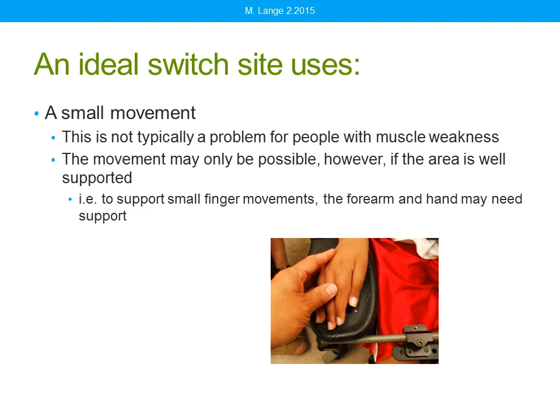We want as small a movement as possible. This is not usually a problem for people with muscle weakness — movements are generally small. But that small movement may only be possible if the area is well supported. Here, Julian has a fiber optic switch embedded in the hand pad of his arm trough. For him to use a very small movement of his thumb to activate that fiber optic switch, his hand, forearm, and shoulder all need to be well supported.